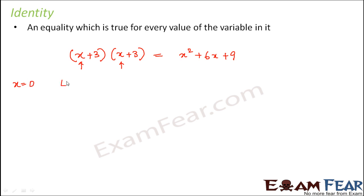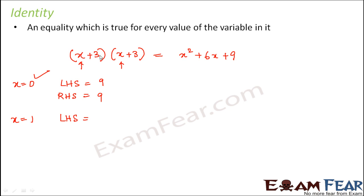Let us try with some random values of x. What if I put x equal to 0? The left hand side would be 0 plus 3, that is 3, multiplied by 3, so 3 into 3 would be 9. The right hand side would be 0 squared is 0, plus 6 into 0 is 0, plus 9 — so this would also be 9. So for x equal to 0, this equation holds true. Let us try x equal to 1: left hand side is 1 plus 3, that is 4, multiplied by 4, which is 16. Right hand side is 1 squared is 1, plus 6 into 1 is 6, so 6 plus 1 is 7, and 7 plus 9 is 16 again.